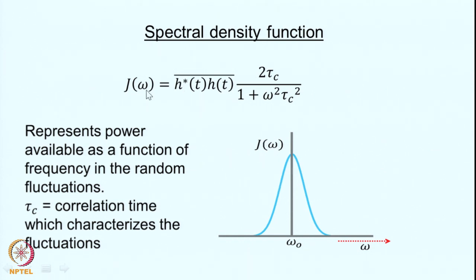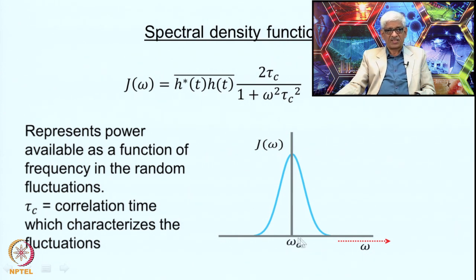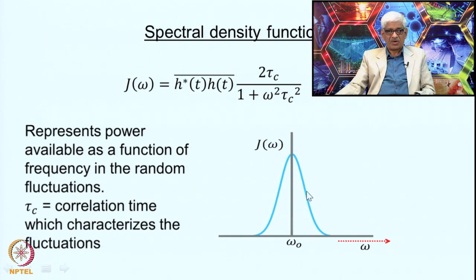Plotting J(ω) as a function of frequency gives a distribution: at low frequencies the power is high, and it rolls off at higher frequencies. For a given spectrometer frequency, the available power at that frequency depends on the value of τc. Different frequencies have different amounts of power available from the fluctuating ensemble.